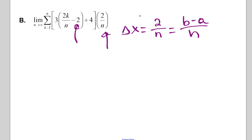First of all, it looks like f of x is 3x plus 4. Okay, and so we can see that a sub k is negative 2 plus 2k over n. Okay, remember to get a sub k, or I'm sorry, x sub k.